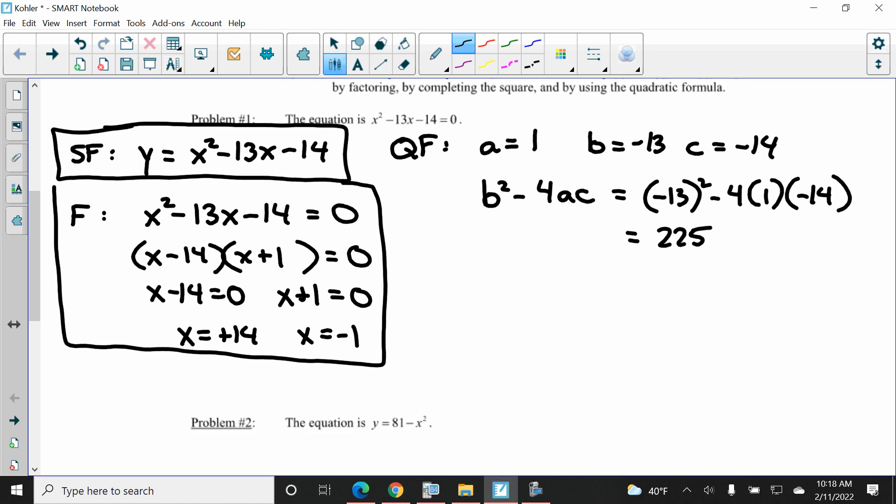And we find out the discriminant is 225, which is a positive value, which means we're going to have two real answers. Okay. Well, now we use the entire quadratic formula. X equals the opposite of B, that's 13, plus or minus the square root of the discriminant, 225, over 2 times A, which is just 2. Square root of 225 is 15.